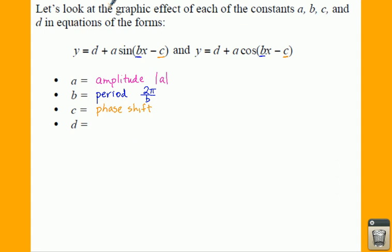Finally, D. Notice that D is out here all by itself, not attached directly by multiplication to your sine or cosine. That is your vertical shift, shifting your graph up or down.